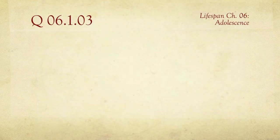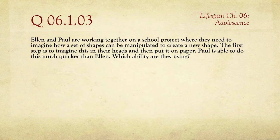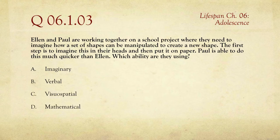Question three: Ellen and Paul are working together on a school project where they need to imagine how a set of shapes can be manipulated to create a new shape. The first step is to imagine this in their heads and then put it on paper. Paul is able to do this much more quickly than Ellen. Which ability are they using? The choices are imaginary, verbal, visual-spatial, and mathematical. The answer is visual-spatial.